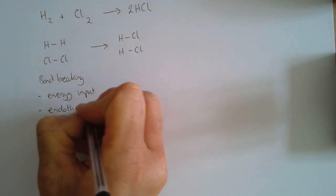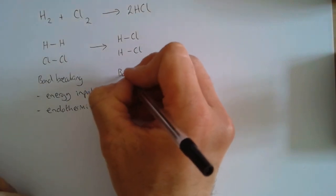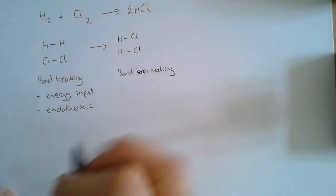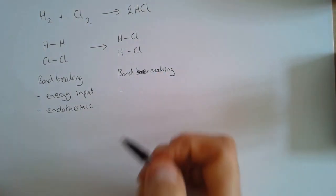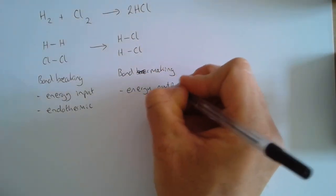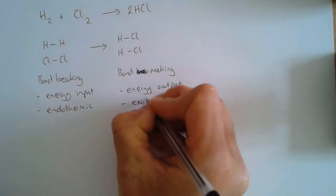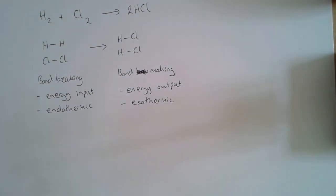And then we have a bond making step, and it's a little bit harder to understand why this is an energy output. We'll go into that in future lessons, but because we're only really interested in the calculations today, we're just going to accept that this is an energy output. The word making tends to imply an energy input, but at the quantum level what we're dealing with here is an energy output, and we say that's exothermic. So we can use this understanding to actually have a go at some calculations.